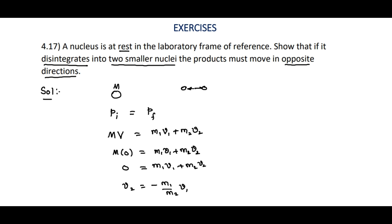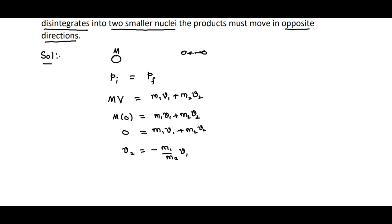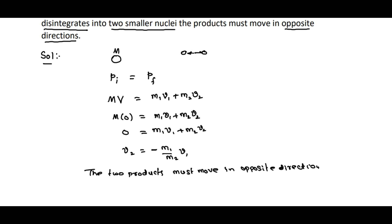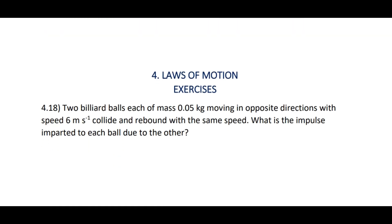Since the masses are not negative, velocity v2 must be negative if v1 is positive. The negative sign indicates that v1 and v2 are opposite in direction. Therefore the two products must move in opposite directions. This is the solution for 4.17.